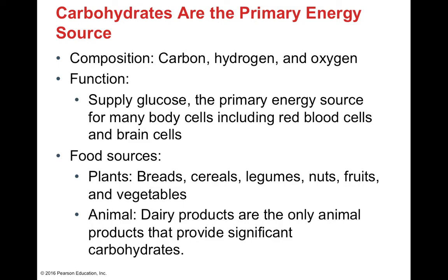The primary immediate energy source for the body is carbohydrates, while fat is the primary storage energy source. Carbohydrates are composed of hydrogen, carbon, and oxygen — the carbon makes them organic. Their function is to supply glucose (C₆H₁₂O₆), the primary energy source for most cells including red blood cells and brain cells. Carbohydrates from food come from plants — breads, cereals, legumes like peanuts, nuts, fruits, and vegetables — and from animal sources only in dairy products.